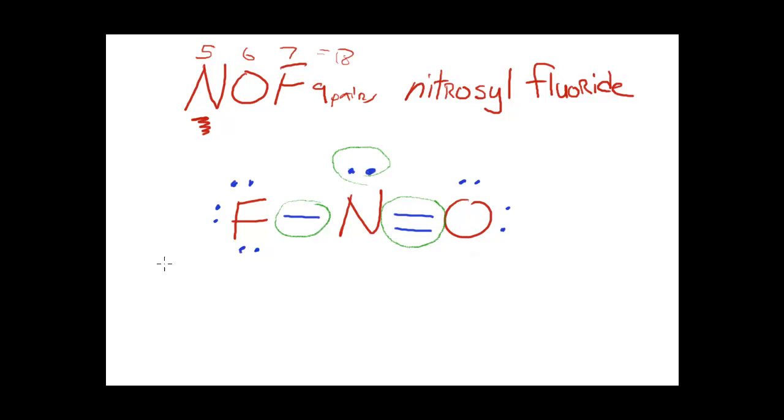We know that the electron pair geometry associated with three regions of density is trigonal planar. And we know that for the trigonal planar geometry, the bond angle is around 120 degrees.